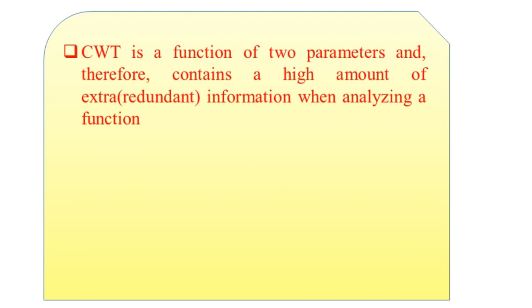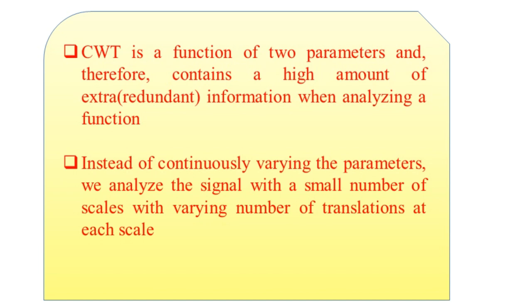For continuous wavelet transform, we have already seen the mathematical representation. The continuous wavelet transform, abbreviated as CWT, is basically a function of two parameters and therefore contains a high amount of redundant information when analyzing a particular function. Instead of continuously varying the parameters, if we analyze the signal with a small number of scales and varying translations, we get the practical form which is the discrete wavelet transformation.